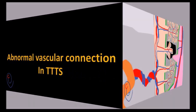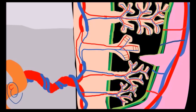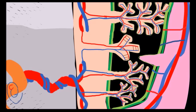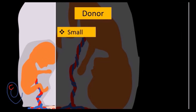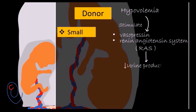In TTTS, there is deep arteriovenous anastomosis but the superficial anastomoses are absent or decreased in number. This unbalanced vascular connection will result in a unidirectional blood shift from one twin called the donor to the other twin called the recipient. The donor will become small in size, and the hypovolemia will stimulate the release of substances that decrease urine production, such as vasopressin and the renin-angiotensin system, and consequently oligohydramnios will develop.